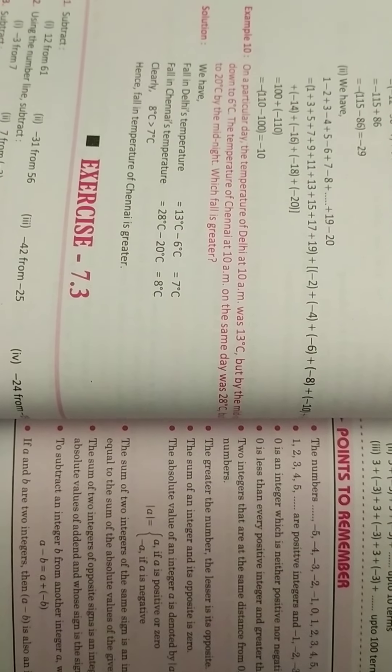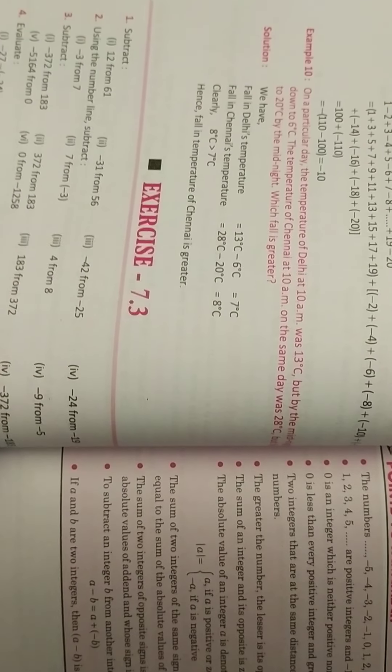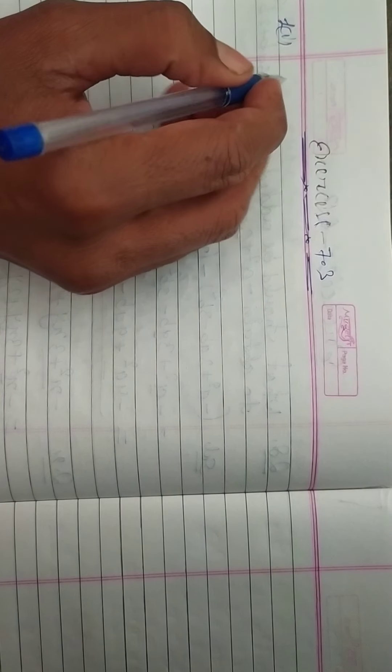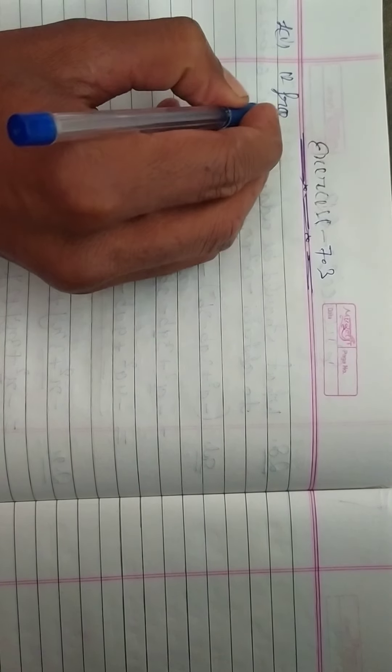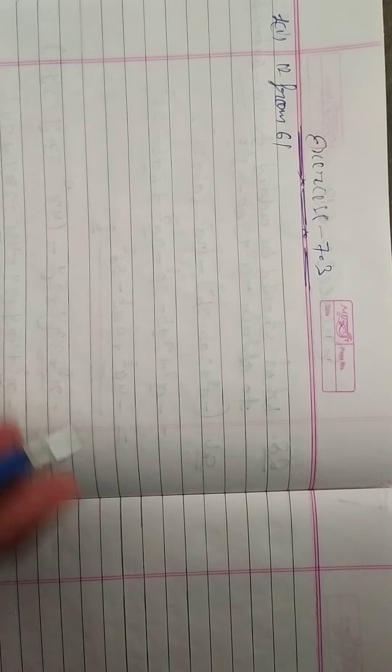So students, in this exercise, question number 1 is subtract. I mean, you can't get it. How do we subtract? Let's see. Here we will see. So first one is 12 from 61. So children, we have to subtract.